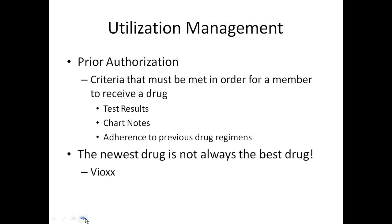Prior authorizations can be fairly straightforward or incredibly complex, depending on the drug. They may require recent test results, chart notes, adherence to a previous drug regimen, or documentation of a specific diagnosis. Adherence to drug regimens is a big factor — when I was doing prior authorization requests at the Medicaid plan, a doctor would often request an expensive drug, but when we checked, the patient hadn't filled the cheaper drug in six months. We couldn't approve the expensive drug if they weren't adherent with the cheaper one, and the doctor's office was always shocked.